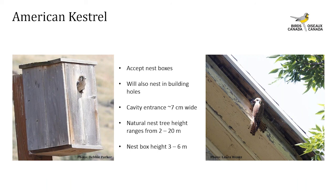Natural and artificial cavity holes average around 7 cm. The tree height in natural cavities ranges from 2 to 20 meters, and the nest box height ranges from 3 to 6 meters.